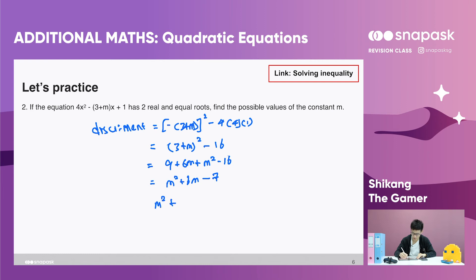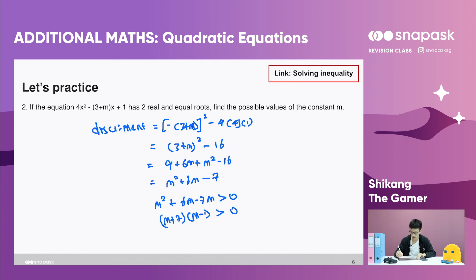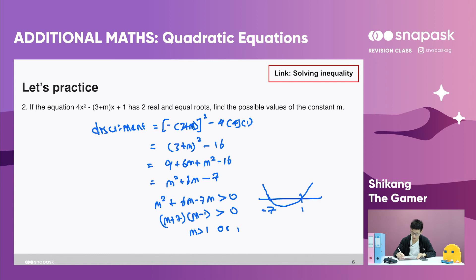By factorizing the quadratic expression, we get (m plus 7)(m minus 1) greater than zero. To solve this inequality, we draw a horizontal number line with 1 and negative 7 on the axis. The quadratic graph shows that for the value to be more than zero, m must be more than 1, or m must be less than negative 7. These are the two possible values for m. Congratulations, we have cleared level 2!